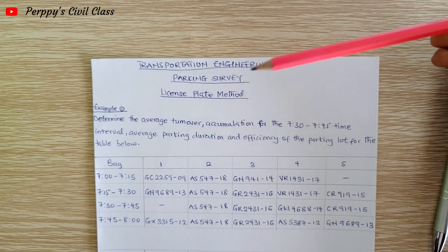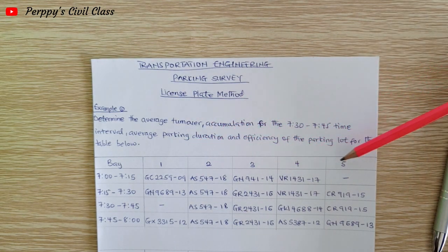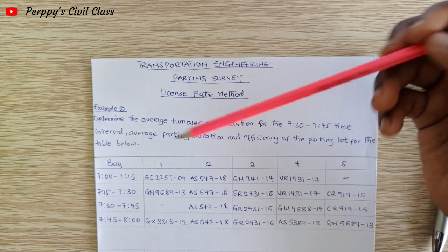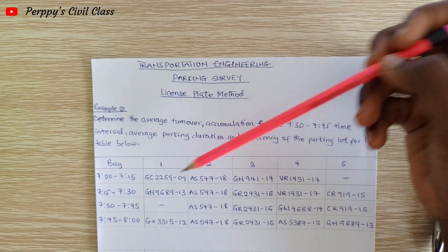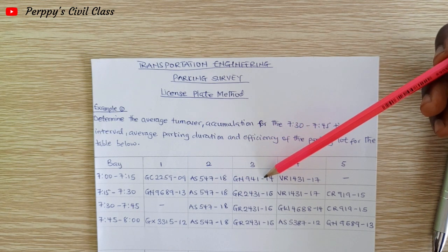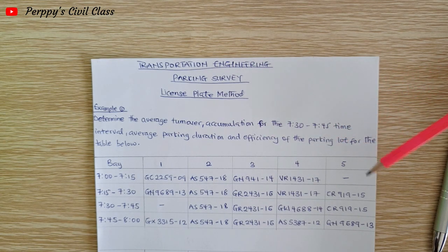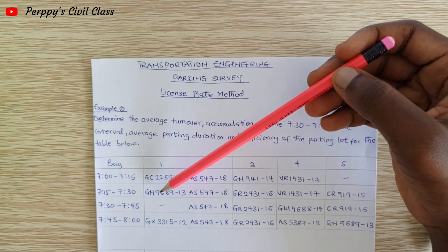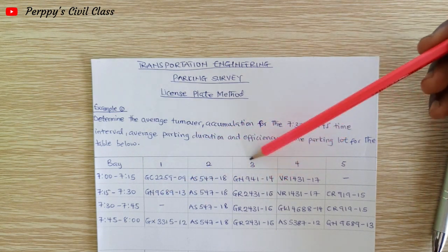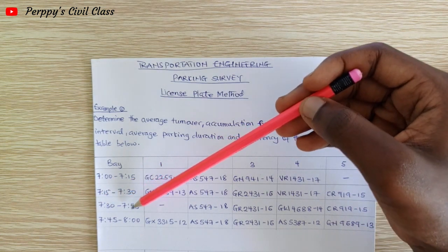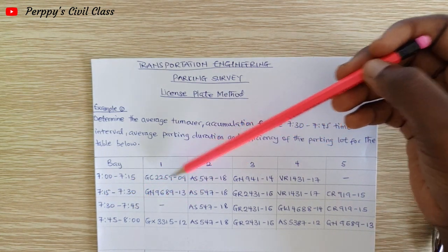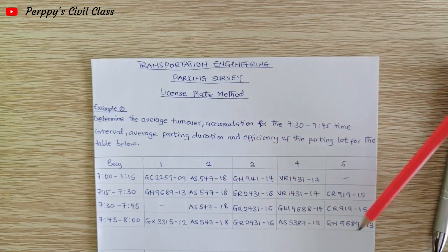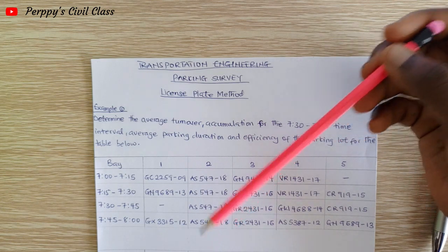the average parking duration, and the efficiency of the parking lot for the table below. The table shows five parking bays. From 7:00 to 7:15, cars were parked in B1, B2, B3, and B4 but no car in B5. From 7:15 to 7:30, all five bays had cars. Between 7:30 to 7:45, no car was in B1 but B2, B3, B4, and B5 had cars.